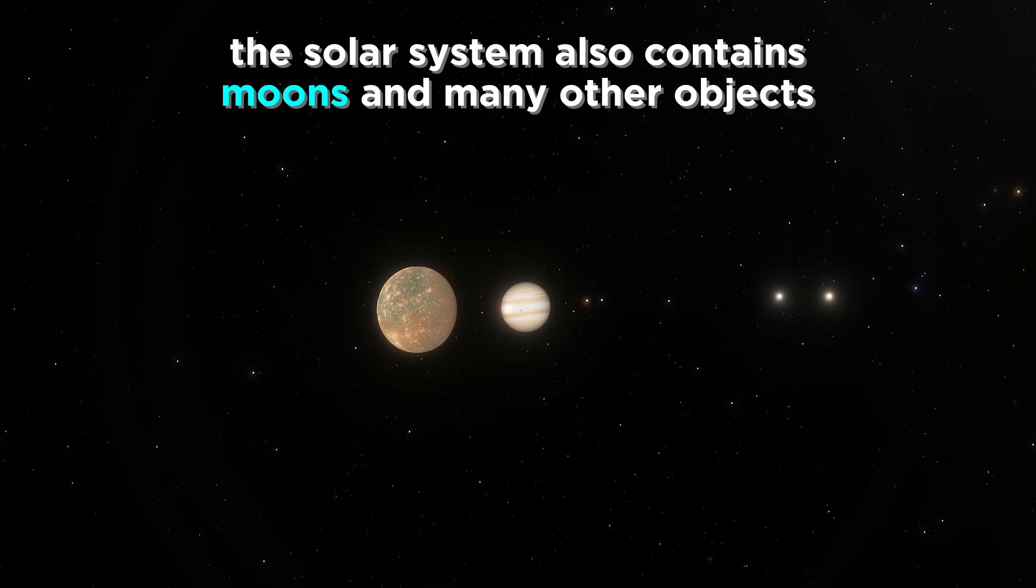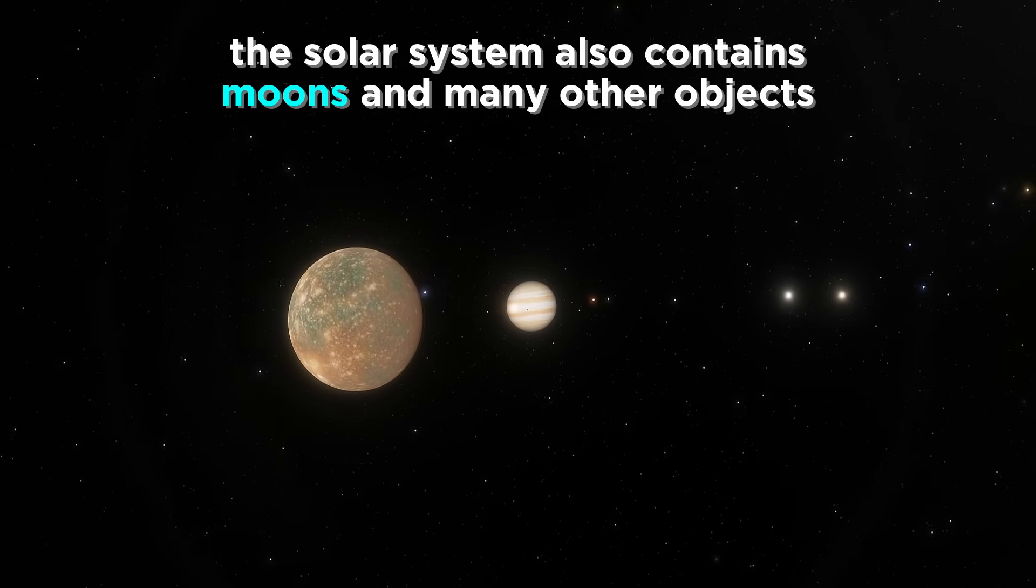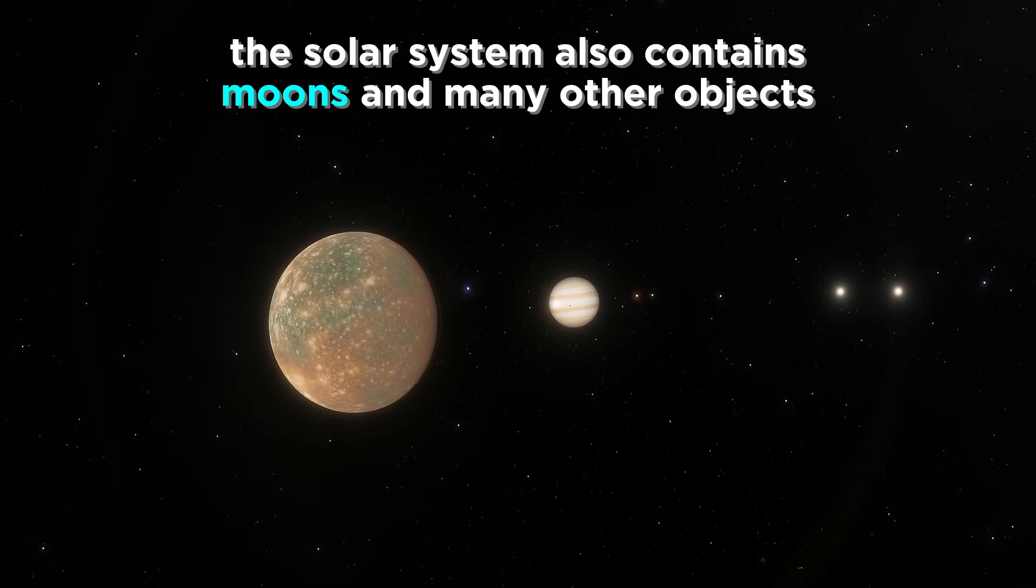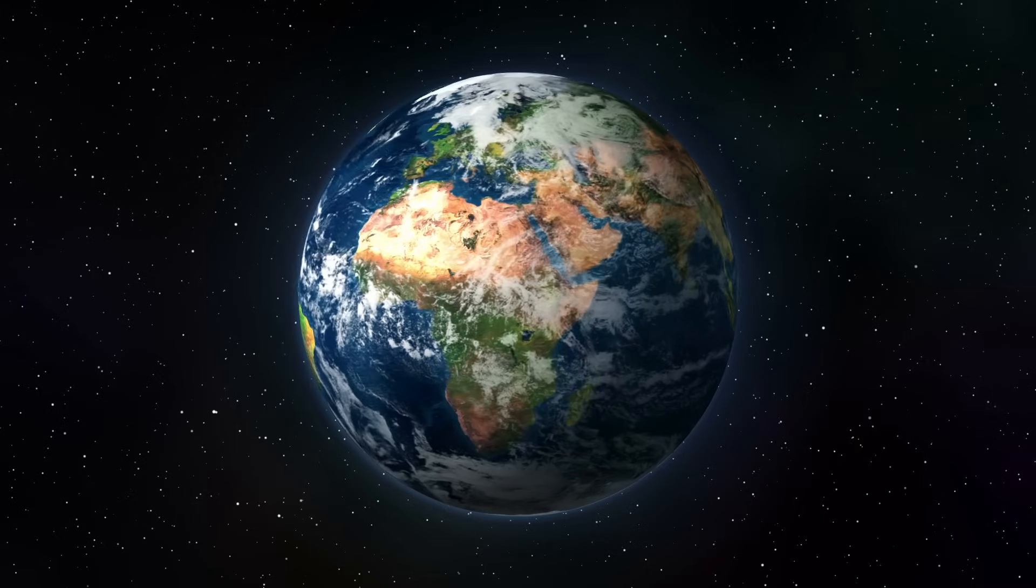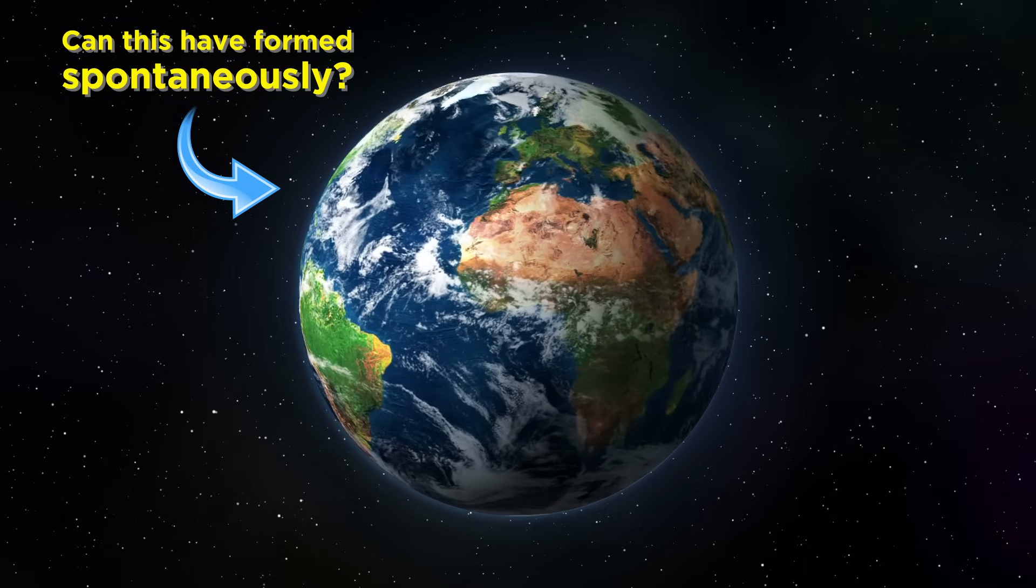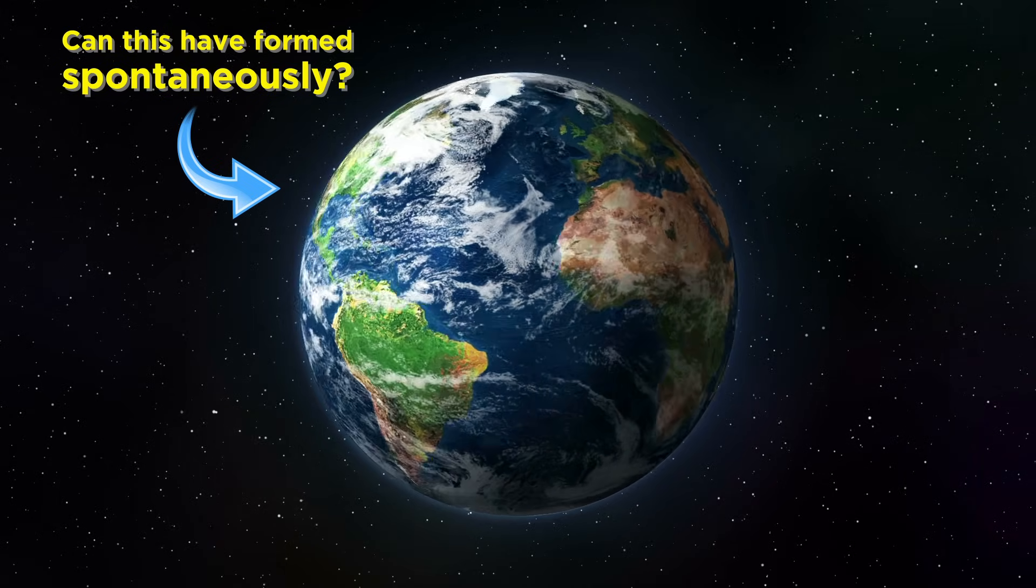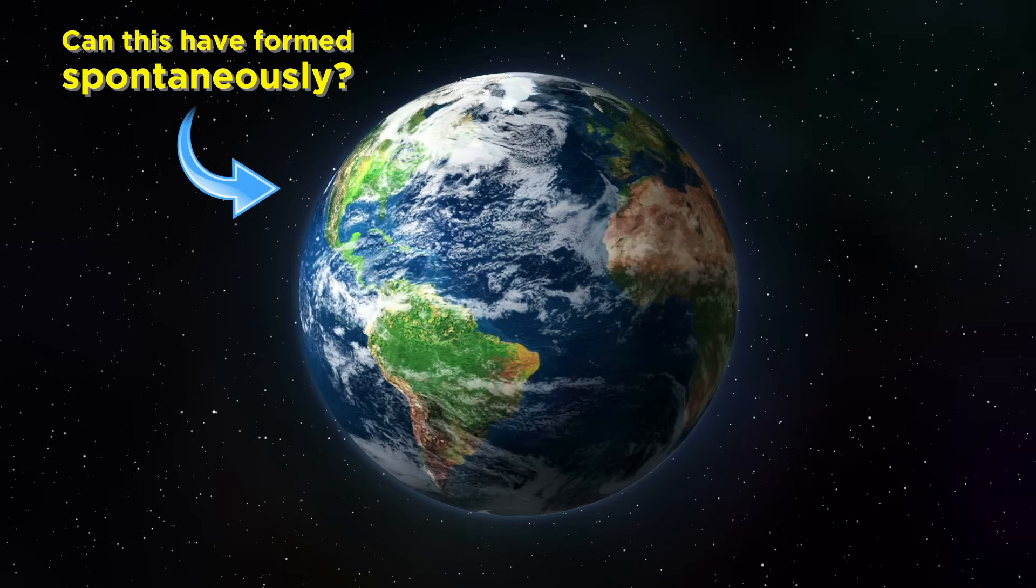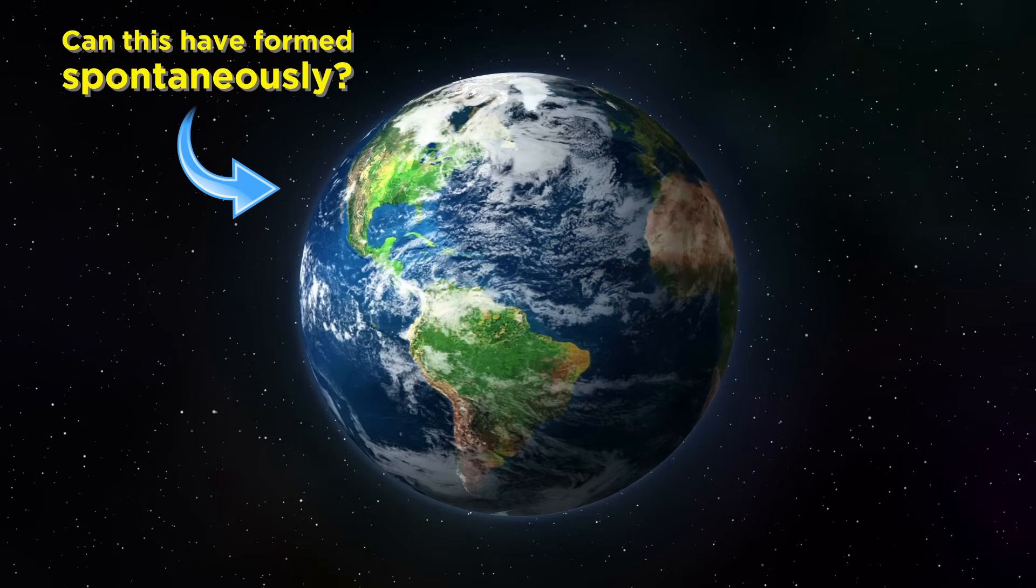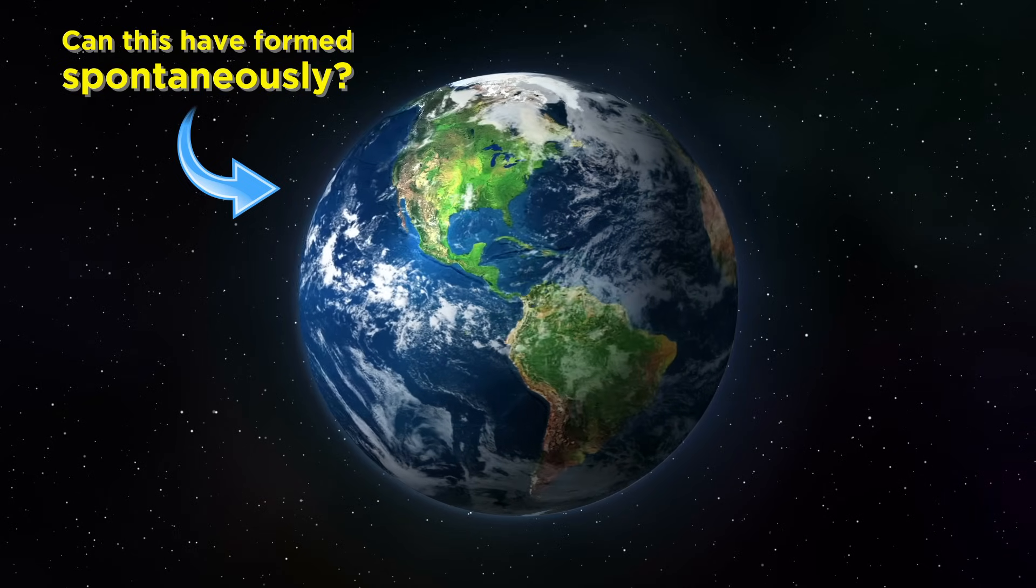Most of these planets have moons, and there are lots of other objects in the solar system that are worth discussing, but we will get to all of them a little later in the series. So we can see how at first glance, it may seem impossible for objects as complex as Earth and the other planets to form spontaneously, but even with just a rudimentary understanding of only two astronomical processes, solar system formation becomes quite intuitive.